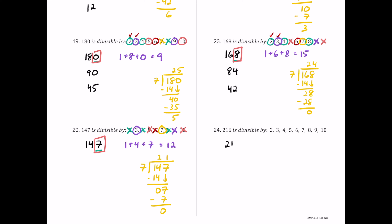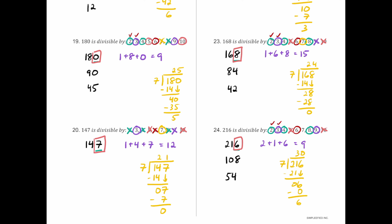For number 24, we have 216. It's even, so 2 works. Half is 108 — still even — so 4 works. Half of 108 is 54 — still even — so 8 works. The digit sum 2 plus 1 plus 6 is 9, a multiple of both 3 and 9. Since 2 and 3 both work, 6 works. The last digit is 6, not 5 or 0, so 5 and 10 fail. Dividing 216 by 7 leaves a remainder of 6, so 7 fails.